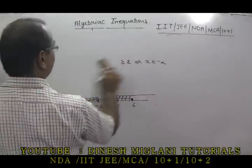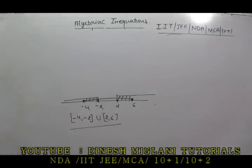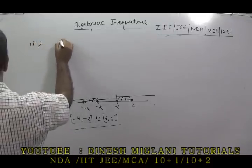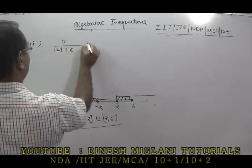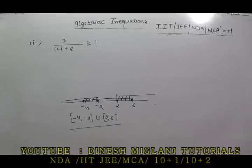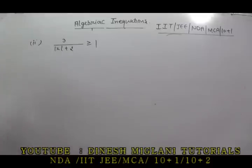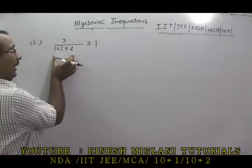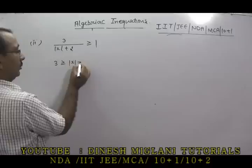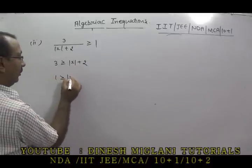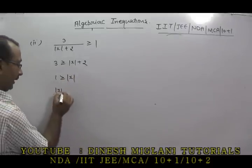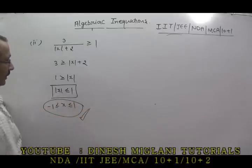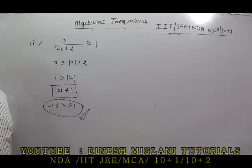Let us take the second problem: 3 / |x + 2| ≥ 1. Find the interval for X. Since 3 is positive and the modulus is always positive, I can cross-multiply: 3 ≥ |x + 2|, which means |x| ≤ 1 after simplification. Wait — rearranging: 3 ≥ |x| + 2, so 1 ≥ |x|, meaning |x| ≤ 1. So X lies between −1 and 1. That is the final answer.